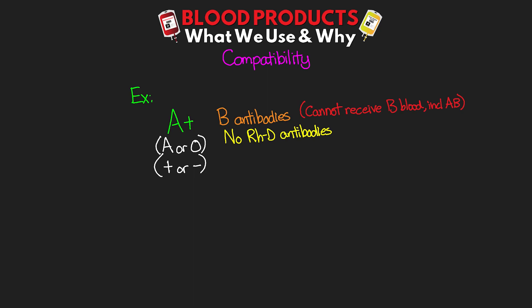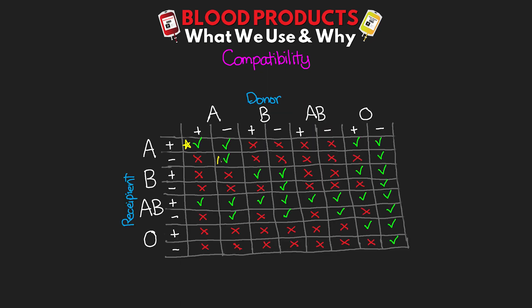We can really summarize all this information in a table. First off, the first choice is always going to be typed and cross-matched blood for our patient. If we either don't know what that is or it's not rapidly available, the second choice is almost always O negative. One slight variation is if we have a patient who's AB — then we can actually give them either A or B blood before we go to O blood type. Our O blood types, and more specifically O negative, is compatible with any other blood type. That's why we refer to this as the universal donor.